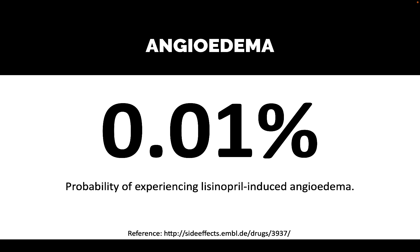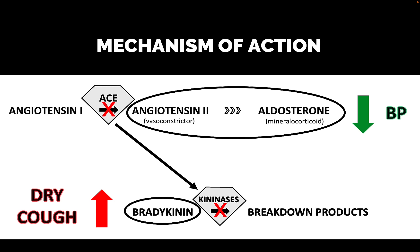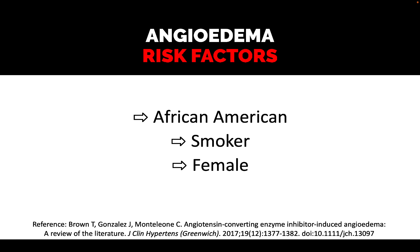Another big side effect, which is very rare fortunately, is angioedema — swelling of the airway, making it very difficult or impossible to breathe. This requires emergency medical attention and occurs in about 1 in 10,000 patients, so 0.01%. The mechanism theoretically also links back to bradykinin accumulation. Risk factors include being African American, smoking cigarettes, or being female.